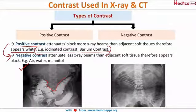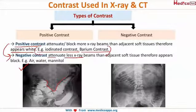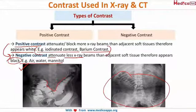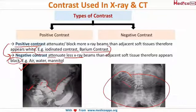Negative contrast media is the opposite of positive contrast. These agents attenuate less X-ray beams than adjacent soft tissue, and therefore appear black. Examples include air, water, and mannitol. Here in this X-ray, you can see where the positive contrast appears white and the negative contrast appears black.